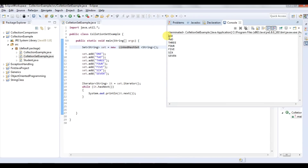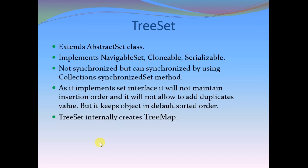Now we can see all objects are printed in the order they were inserted into the set — LinkedHashSet maintains insertion order. The last collection is TreeSet, which extends AbstractSet and implements NavigableSet, Cloneable, and Serializable. NavigableSet extends SortedSet, which extends Set, so TreeSet also implements Set indirectly. It is not synchronized but it will not maintain insertion order and will not allow duplicate values, but it keeps objects in default sorted order.